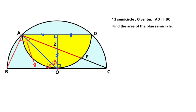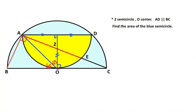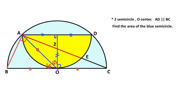Then if we connect these two points, notice that angle BAC is opposite the diameter, so here must be equal to 90 degrees. If we focus on triangle BAO, this triangle is an isosceles triangle because these are also radii of the blue semicircle, so these base angles must equal 67.5 degrees. That leaves 22.5 degrees here.